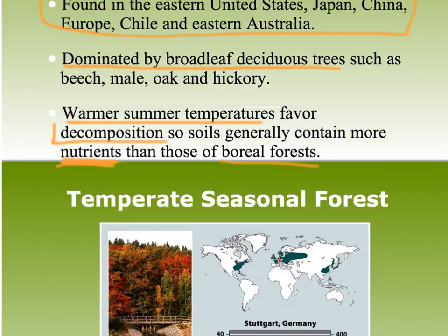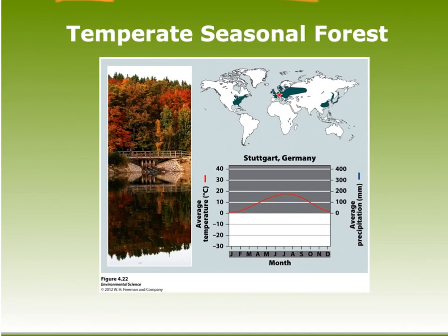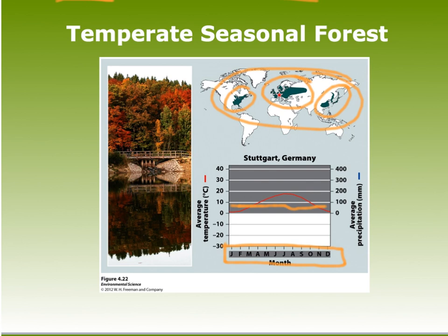It supports a lot of organisms. Here it is on the map — you have some in the eastern United States, most of Europe, parts of China and Japan. Here's the graph. You see there's a 12-month growing season. The precipitation is fairly consistent, not super high, and the temperature varies depending on what month you're in.